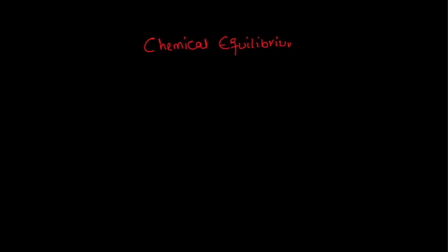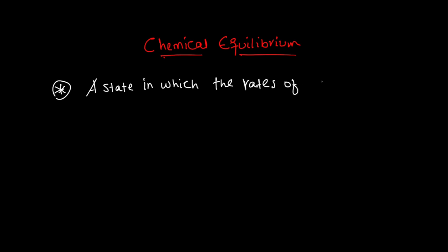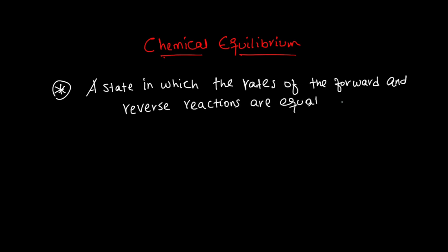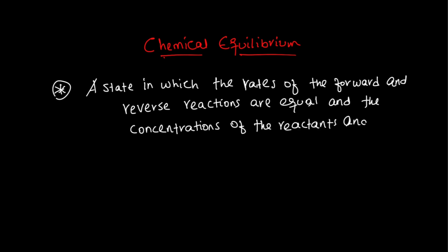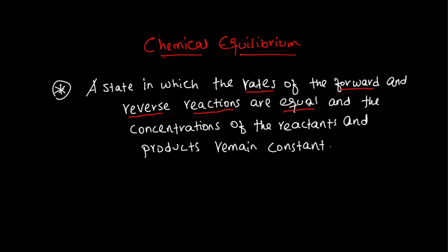Chemical equilibrium is a state in which the rates of the forward and the reverse reactions are equal and the concentrations of the reactants and products remain constant. The rate of forward and reverse reactions is equal, and the concentration of the reactants and the products is constant.